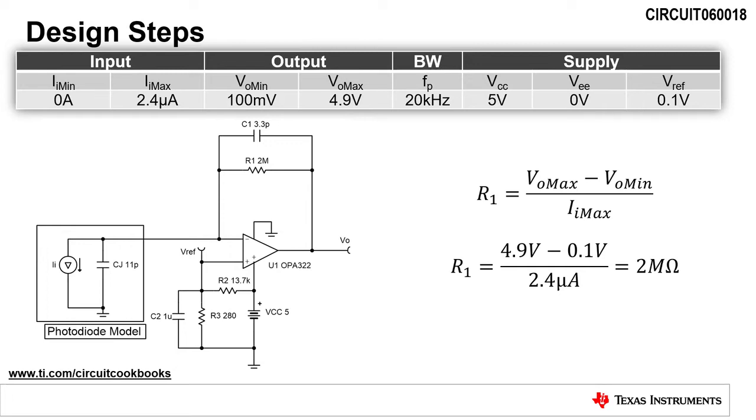The first step is to calculate the value of the feedback resistor, R1. We calculate this by dividing the output voltage swing, VO max minus VO min, by the maximum input current, I sub I max. R1 is calculated to be 2 megaohms.